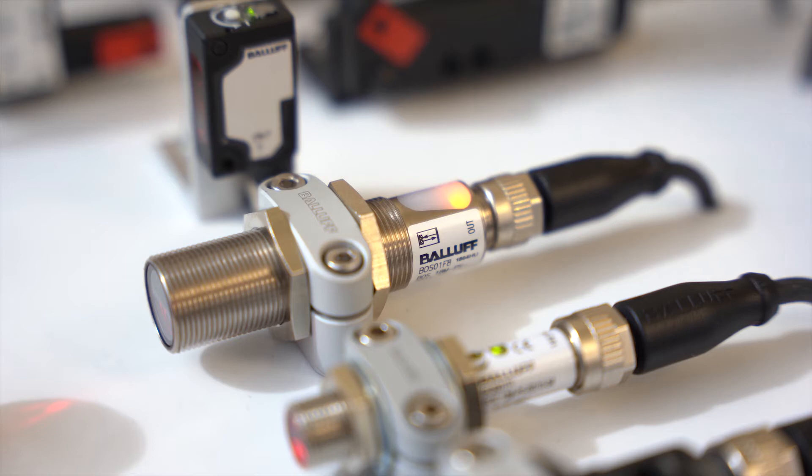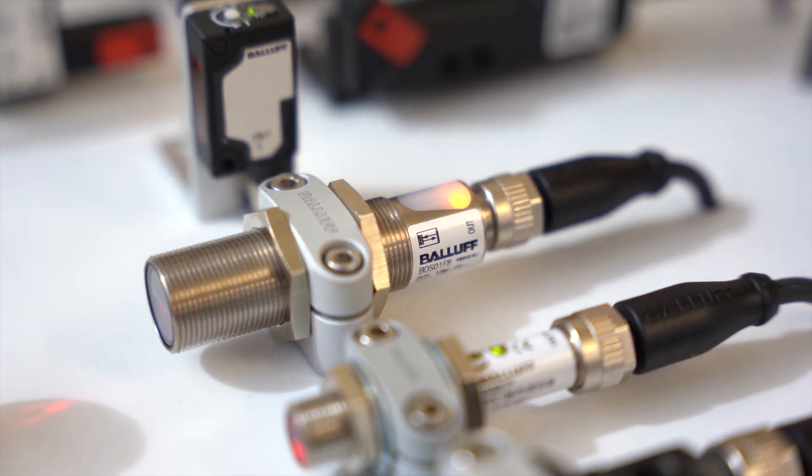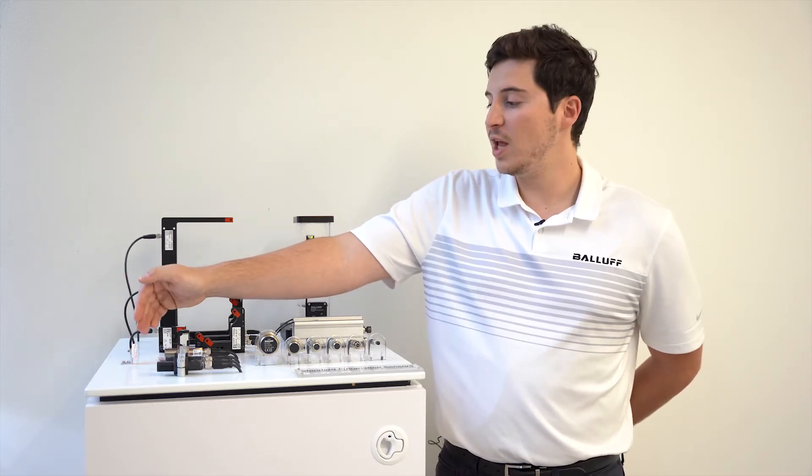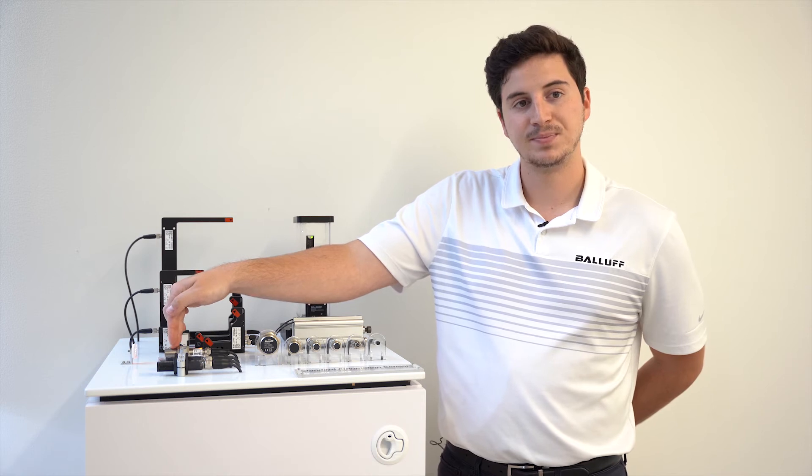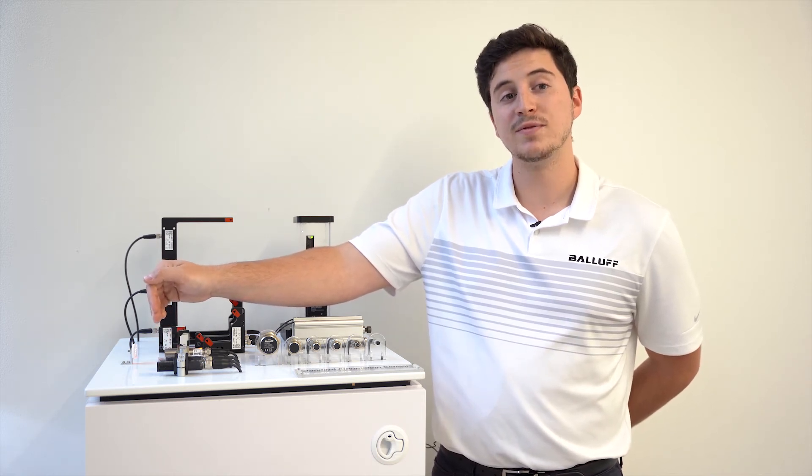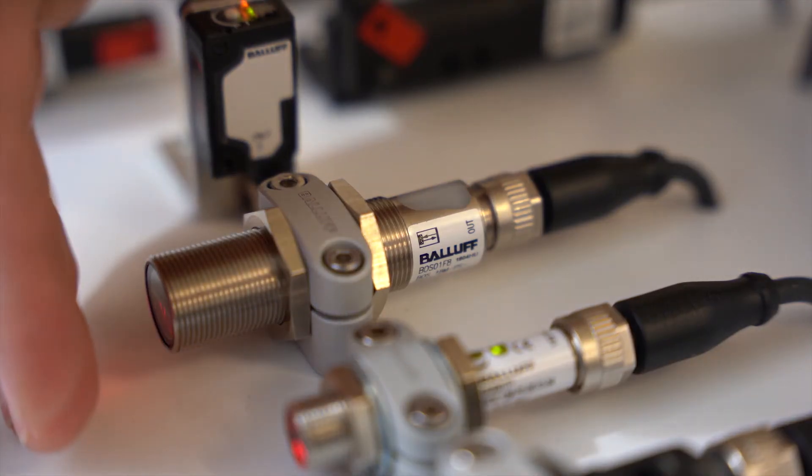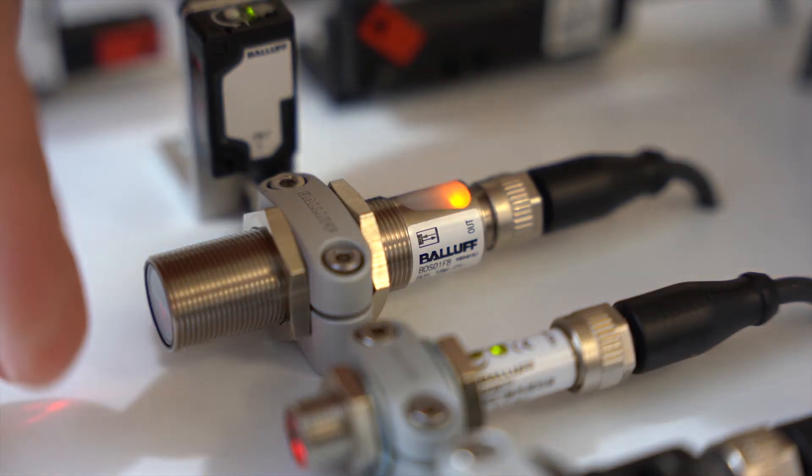First, I want to discuss the retroreflective sensor. This is a retroreflective sensor. As you can see, it relies on a reflector to reflect the light beam back to its receiver. This light barrier detects objects regardless of surface and material. As my hand passes through that light beam, you will see it trigger the sensor output light.